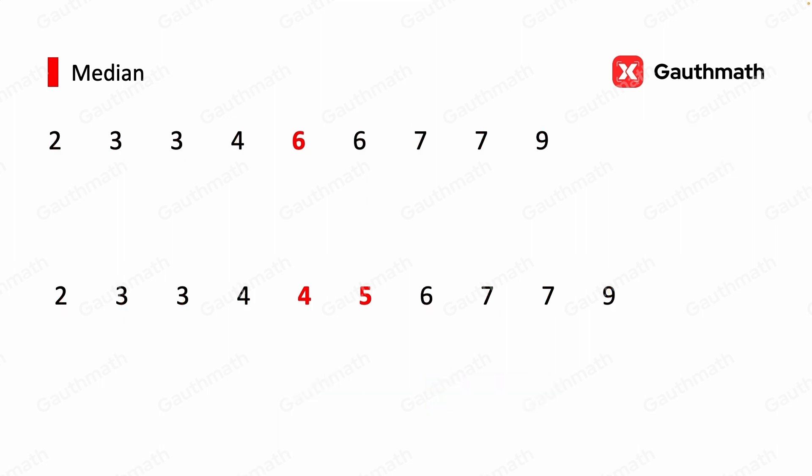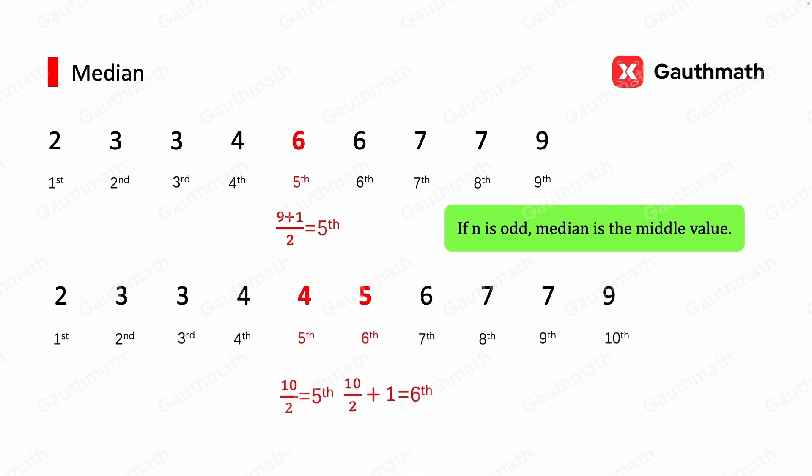So in conclusion, if the sample size is odd, then the median is equal to the middle term in an ordered set. If the sample size is even, then the median is equal to the mean of the two middle numbers in an ordered set.